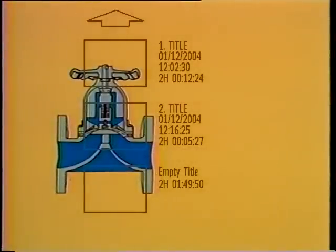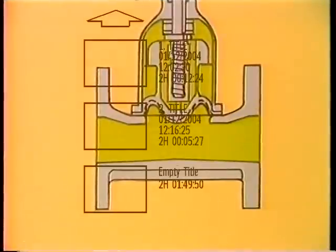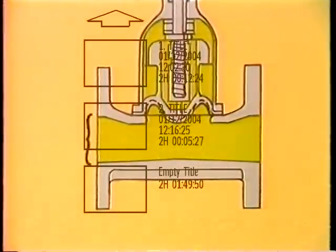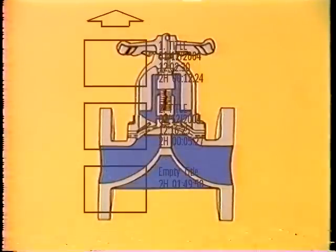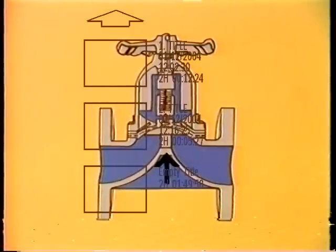There are two basic body designs used for diaphragm valves: the weir and the straight through. The straight through body has no obstructions where the diaphragm seats, and the bore of the valve is the same as that of the piping it's attached to. The weir, on the other hand, has a raised surface where the diaphragm seats on the valve body — this allows for the use of stiffer diaphragm material but reduces the area of flow through the valve. You'll find additional information about materials used in the manufacture of diaphragm valves in your text.